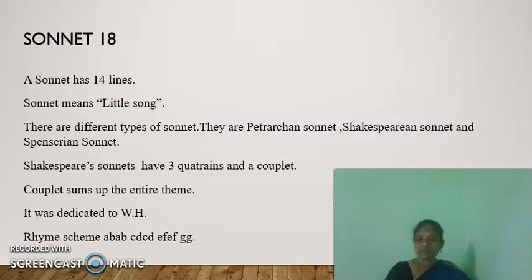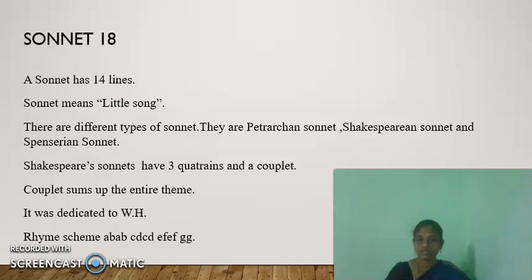Sonnet 18 represents the typical English sonnet, also called the Shakespearean or Elizabethan sonnet. It has the rhyme scheme ABAB CDCD EFEF GG, and it was dedicated to Mr. W.H.